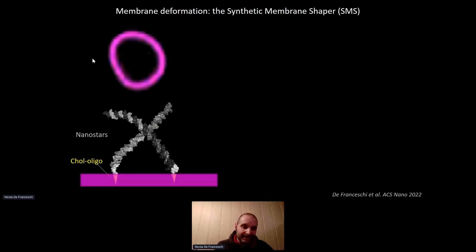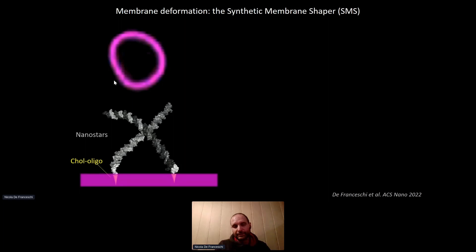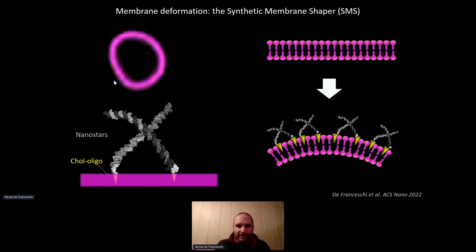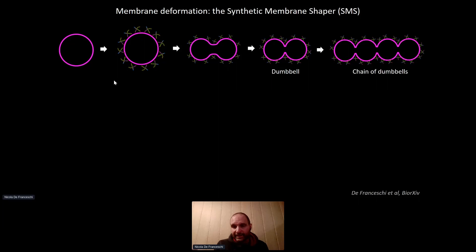The synthetic membrane shaper is an ensemble of nanostars — small DNA assemblies, about 100 kilodaltons in size. They're basically a Holliday junction with two cholesterol moieties at the end of two arms. When these cholesterol moieties encounter a membrane, they anchor the nanostar to it. If you bind nanostars asymmetrically on one side of the membrane only, that leaflet will expand while the other will not, causing curvature. Because of the particular properties of liposomes, what you get is exactly a membrane deformation forming a dumbbell.